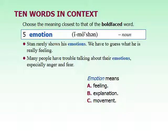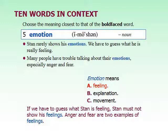The next word is emotion, a noun — our clue is the '-tion' ending. Stan rarely shows his emotions; we have to guess what he's really feeling. Many people have trouble talking about their emotions, especially anger and fear. On page 131, number four: a strong feeling. Emotion is simply another word for feeling. The first example shows someone hiding feelings; the second gives examples — anger and fear — as types of emotions.